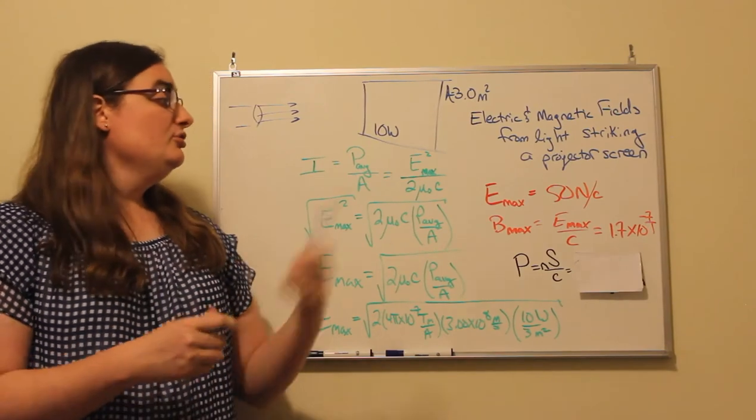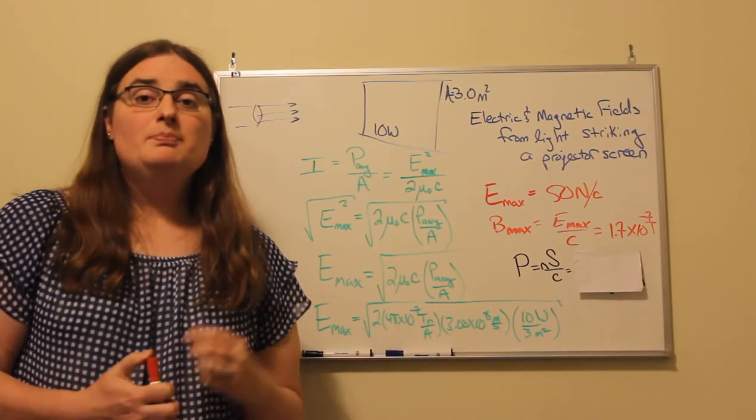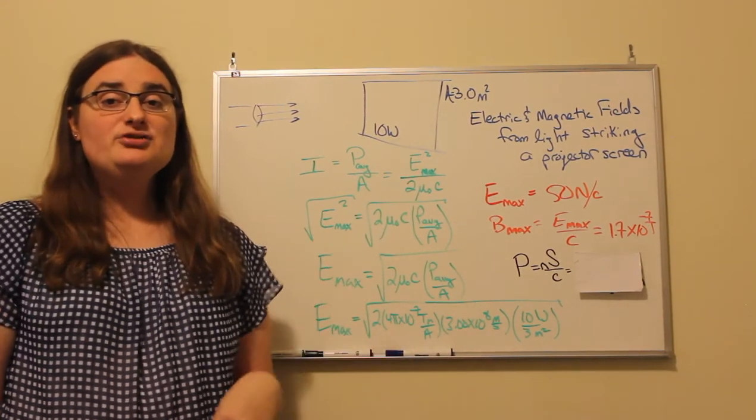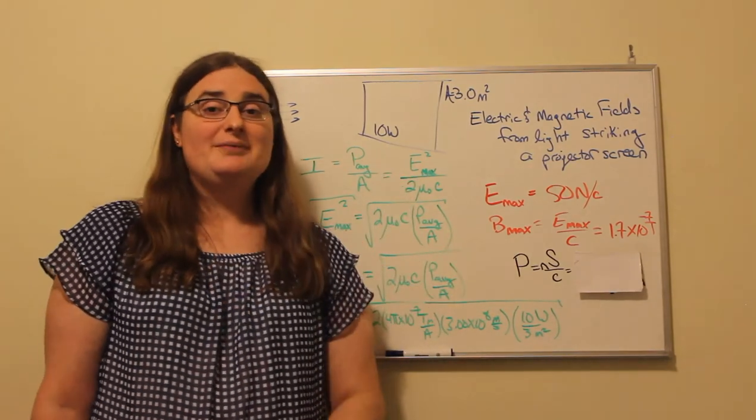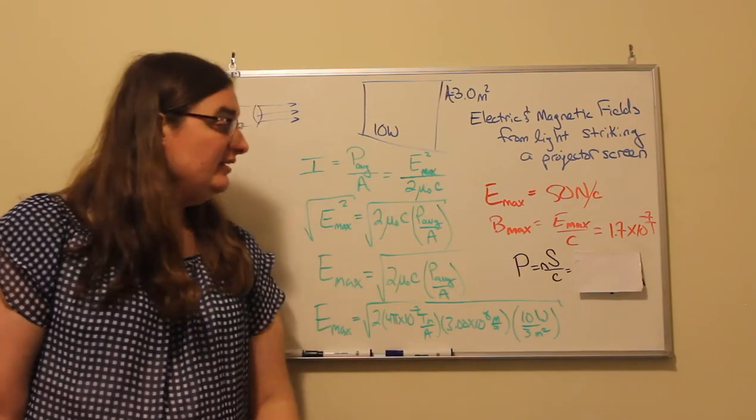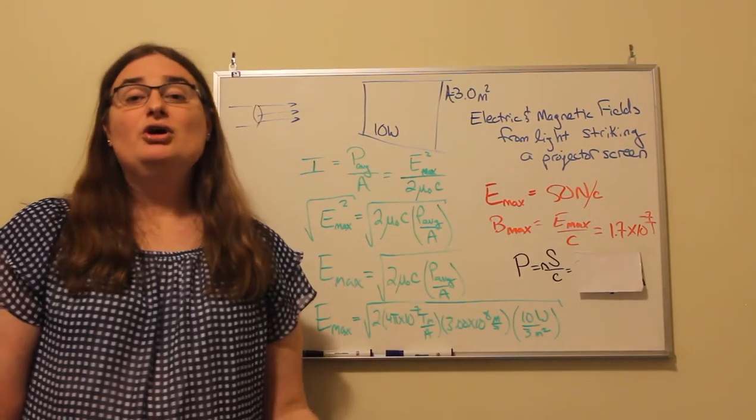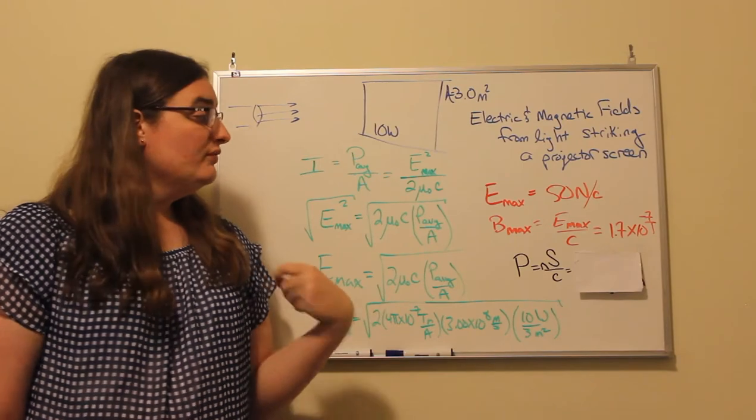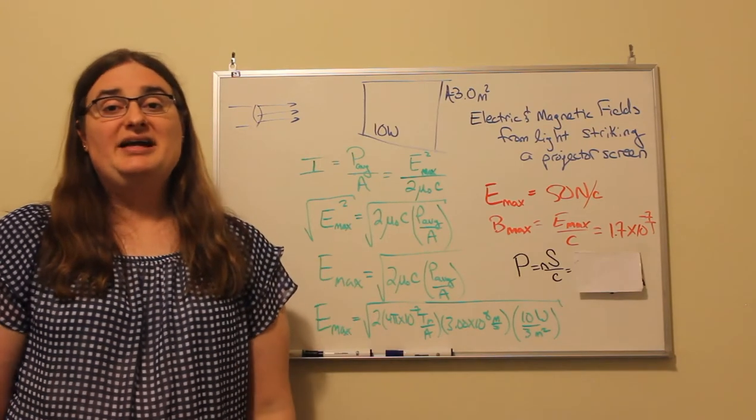So using our relationship between magnetic and electric field amplitudes, the magnetic field amplitude is the electric field amplitude divided by the speed of light. So our magnetic field would have an amplitude of 1.7 times 10 to the minus 7 tesla.